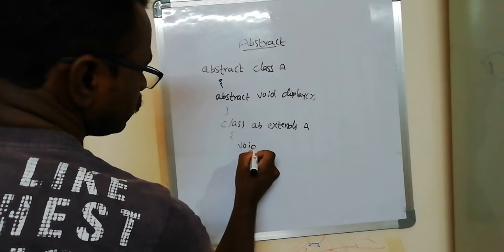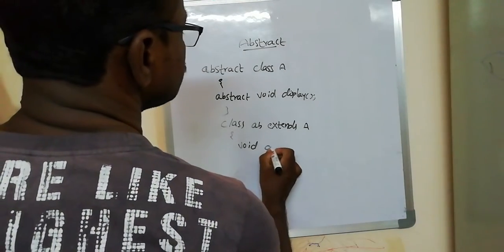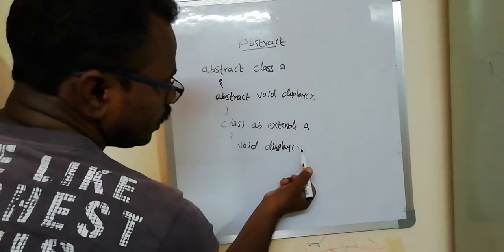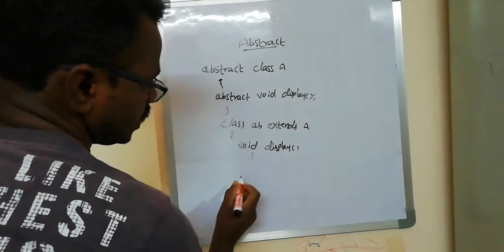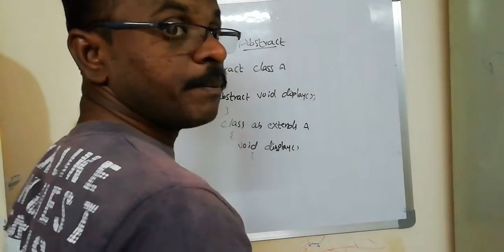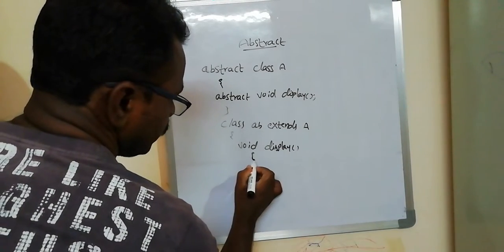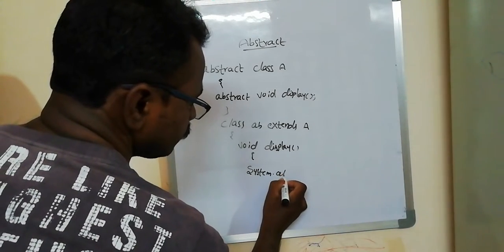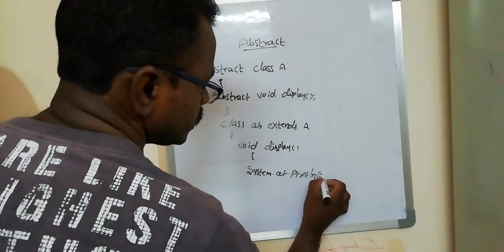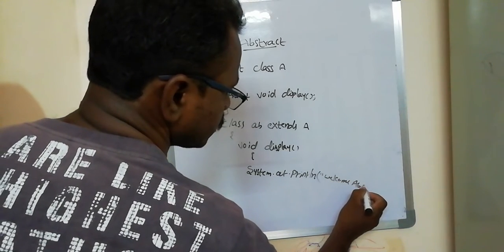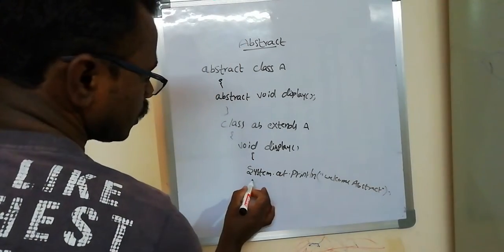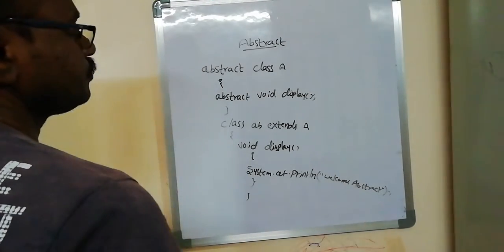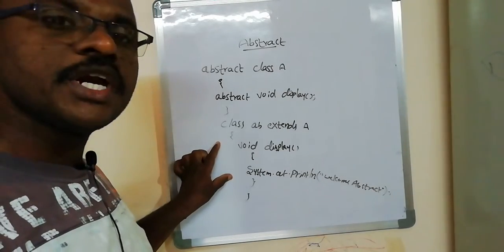We can write 'void' — we know that 'void' is a non-return keyword. 'display' is the name of the abstract method. We cannot declare a semicolon here because we are starting the body section. If a semicolon is placed it will produce a compile-time error. We open the braces, and inside write a display message using 'System.out.println', for example: 'welcome abstract concept'. Then we close the display method and close the class B.